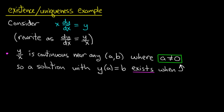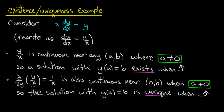Now, what about uniqueness? We have to take the partial derivative of y over x with respect to y, holding x constant. That turns out to be 1 over x. And again, 1 over x is continuous so long as the denominator is not 0, so it's continuous near any point so long as a is not equal to 0.